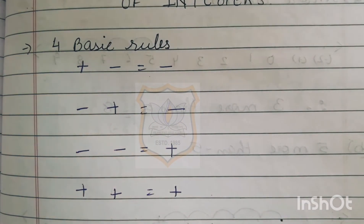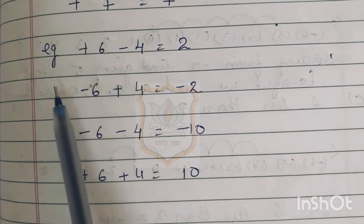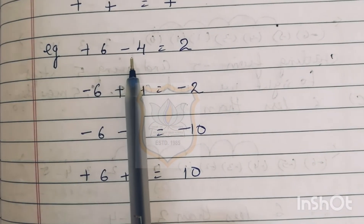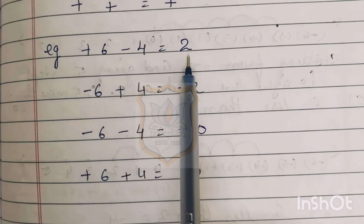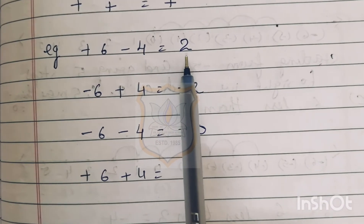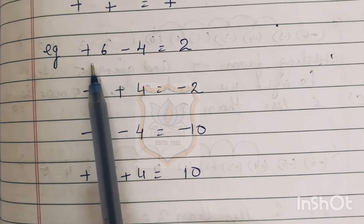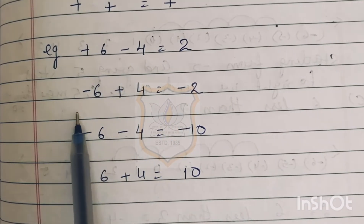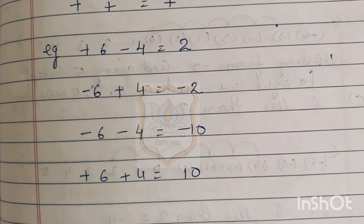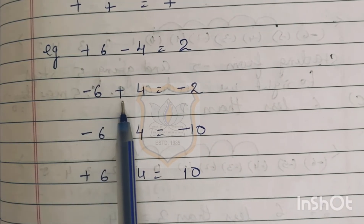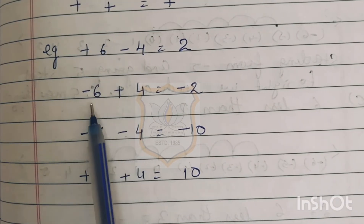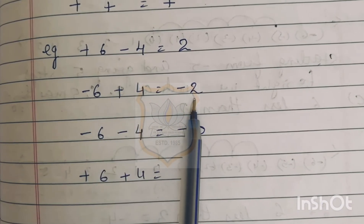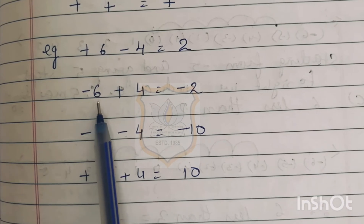Example 1: plus 6 minus 4. Plus-minus is minus, so we subtract 4 from 6, giving 2. We place the sign of the greater number — 6 is greater, so the answer is positive 2. Example 2: minus 6 plus 4. Minus-plus is also minus, so we subtract 4 from 6 to get 2, and since 6 is greater the answer is minus 2.